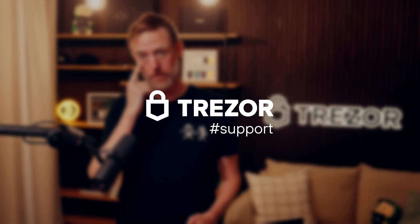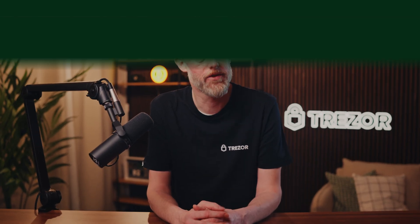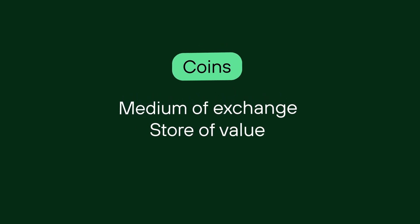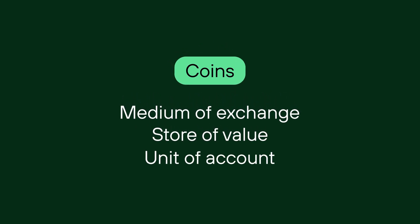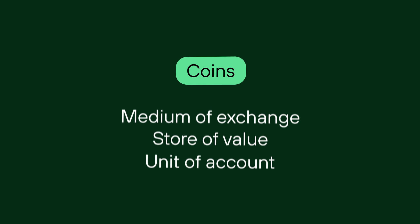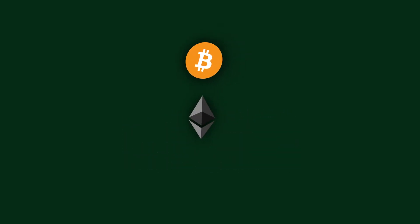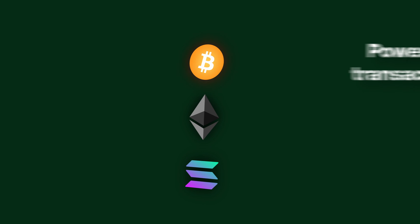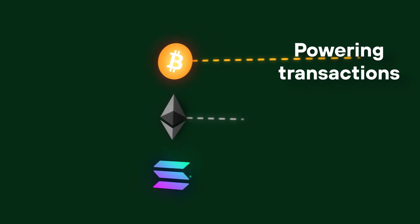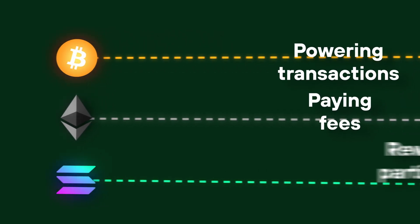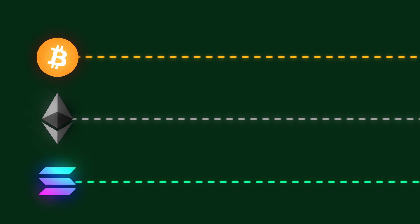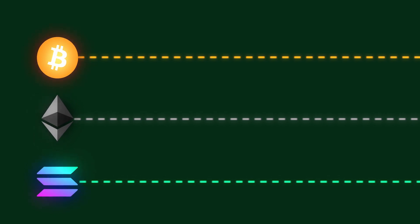Coins are digital assets that operate on their own blockchain. They serve as a medium of exchange, a store of value, and a unit of account within their network. Examples include Bitcoin, Ethereum, and Solana. Coins are essential for powering blockchain transactions, paying transaction fees, and rewarding network participants. They form the foundation of a blockchain's economy.